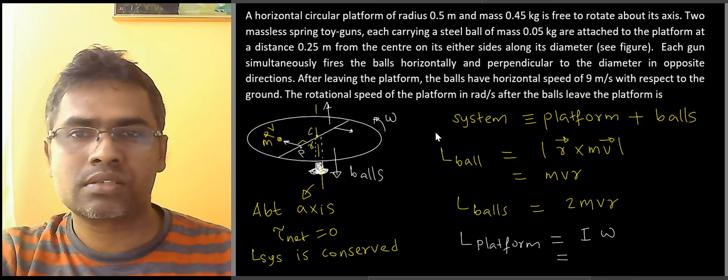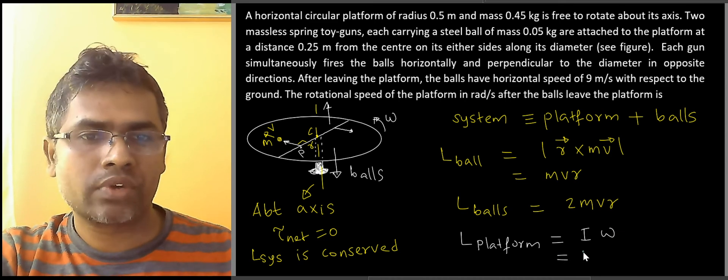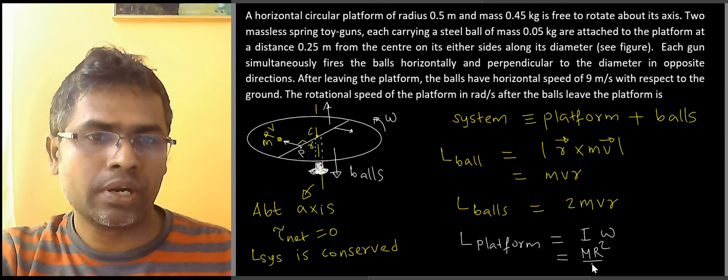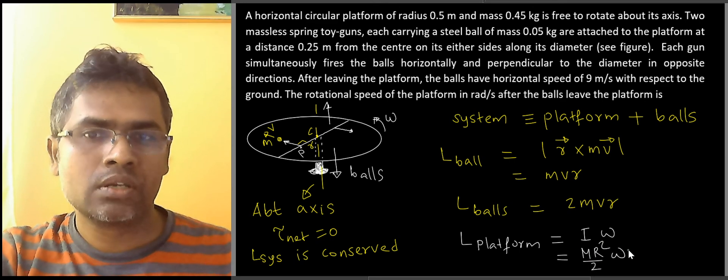What is I? It is taken as a uniform disc, so we can write this as Mr squared by 2 omega.